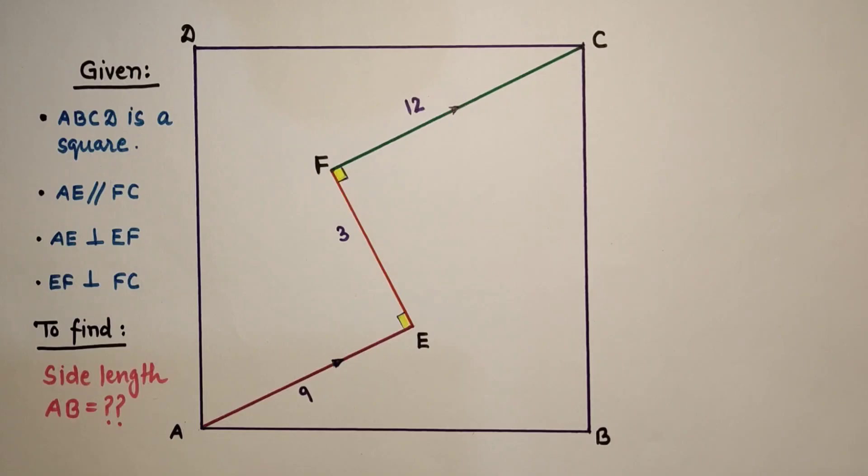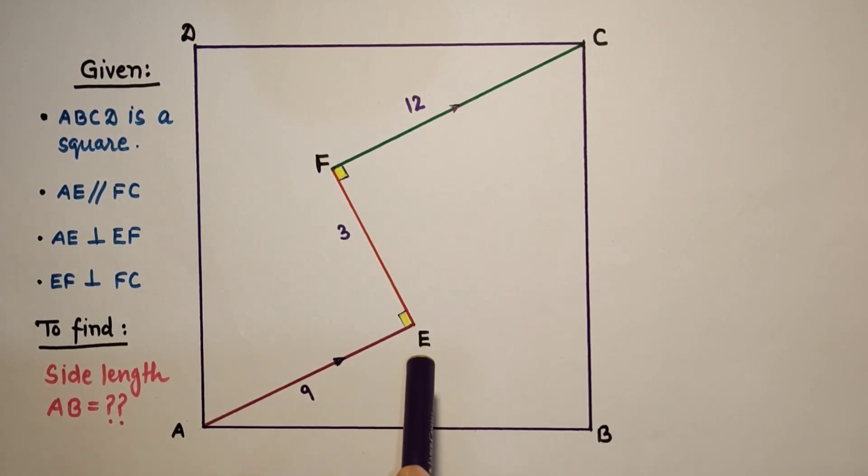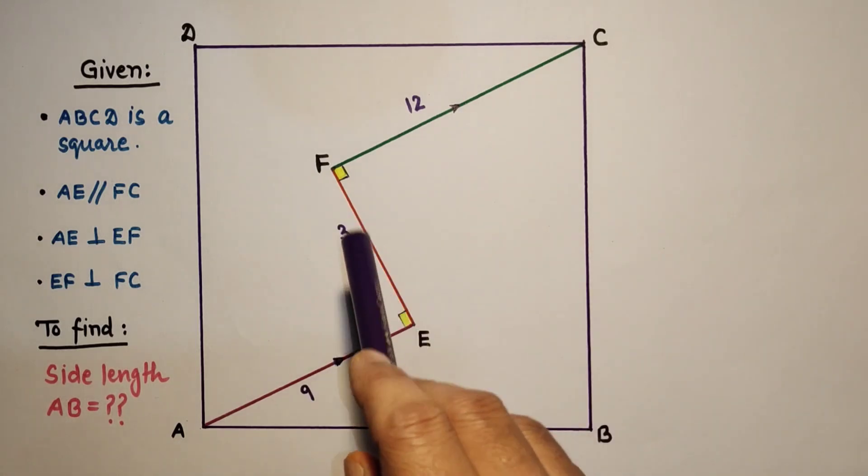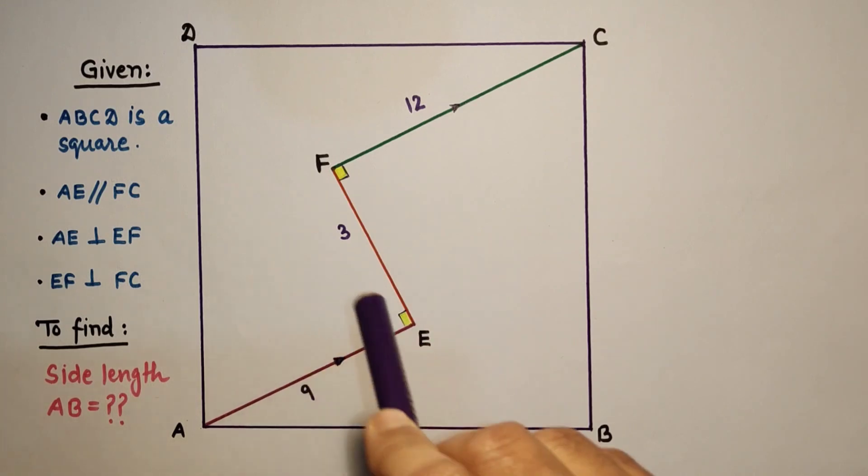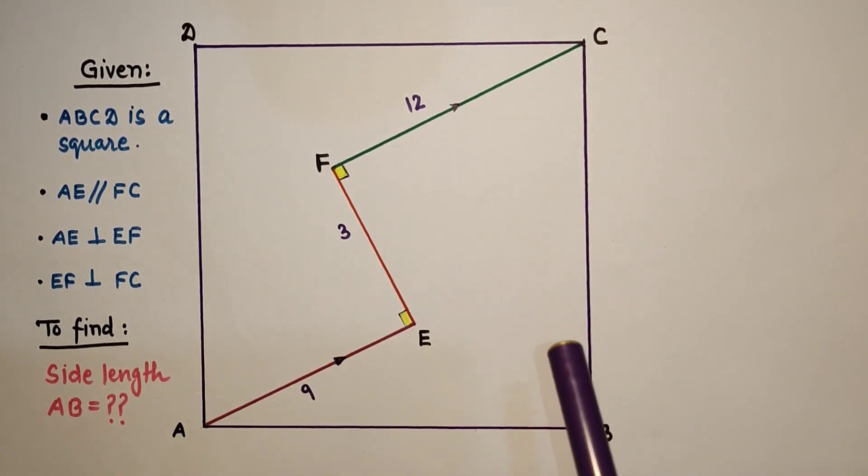Hello friends and respected viewers, welcome all of you. Here is a simple question in front of you in which AE is given as 9 units, EF and FC are given 3 and 12 units respectively. AE and FC are parallel, AE is perpendicular to EF, and EF is perpendicular to FC. We have to find the side length of the square.